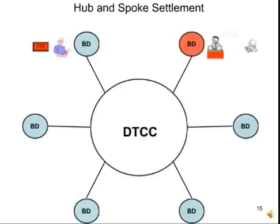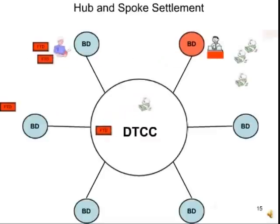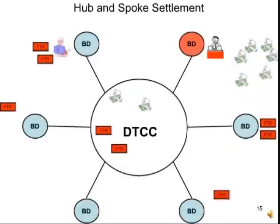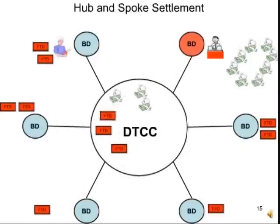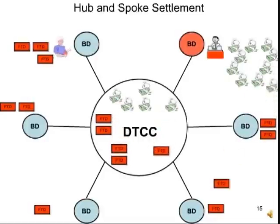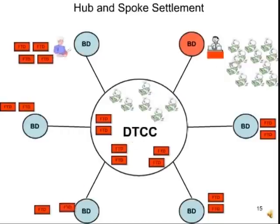So he starts trading with grandma. The FTDs flow through the DTCC and bounce around within the DTCC. If, for every 100 legitimate shares there's one FTD, the system is going to keep on working — it's not going to grind to a halt. But if we ever reach the point where for every 100 legitimate shares there's 50, 100, or 200 of these FTDs, it will become like sand in the bearings of the economic engine.